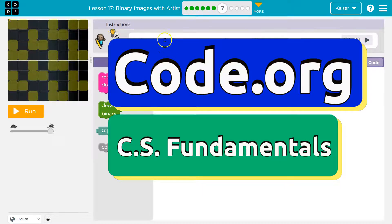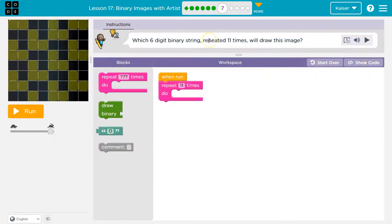This is code.org. Which six-digit binary string, and remember, string is anything in quotes, repeats 11 times will draw this image?